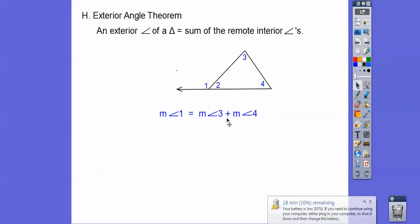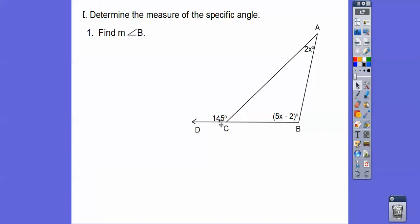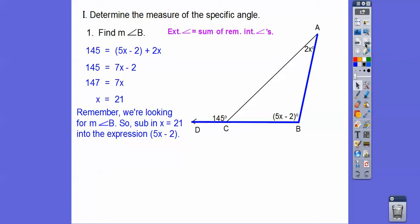Determine the measure of the specific angle. Here I have an exterior angle and two remote interior angles, so 145 equals those two guys added together. Combine like terms, add 2 to both sides, divide by 7. Now it says find the measure of angle B. We're going to plug in the value. 5x minus 2... 5 times 21 is 105. So we get 105 minus 2, which is 103, so that angle is 103.